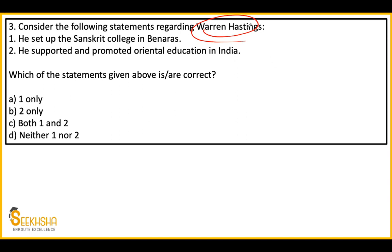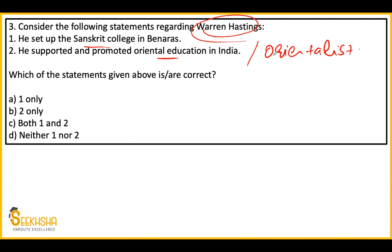Third question: two statements are given related to Warren Hastings. First, he set up the Sanskrit College in Benares. Second, he supported and promoted oriental education in India. Warren Hastings was an orientalist. You need to identify which statement is correct.